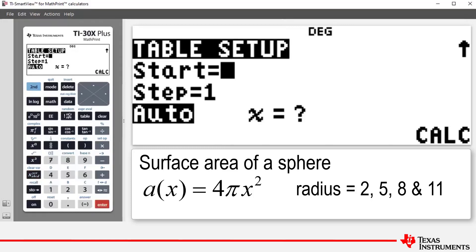Step specifies the step length for x and notice that it's currently set at one, which means x values increase by one. Auto generates a series of values for y based on the start and step values, and ask x allows you to build a table manually for chosen values of x.